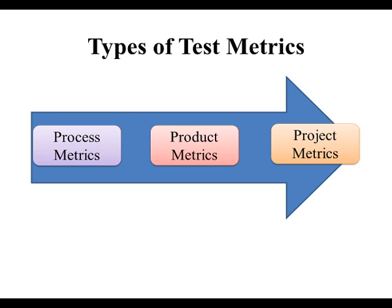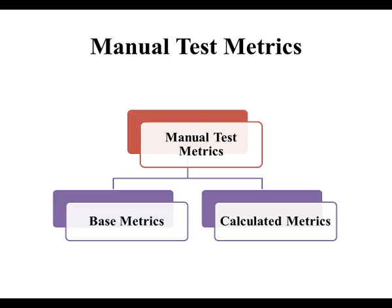Now, let us look at the manual test metrics. In software engineering, manual test metrics are classified into two classes: Base metrics and Calculated metrics. Base metrics is the raw data collected by a test analyst during the test case development and execution. For example, number of test cases executed, number of test cases, number of test cases passed, number of test cases failed, etc.